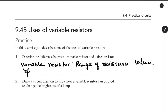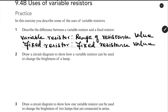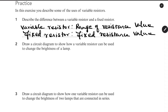A fixed resistor has a fixed resistance value. With a variable resistor we can adjust the range by turning the knob. Second question: draw the circuit diagram to show how a variable resistor can be used to change the brightness of the lamp.